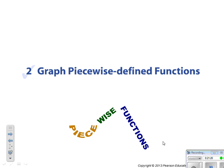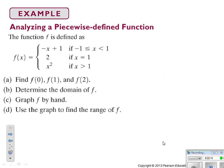Second learning objective: graph piecewise defined functions. That means we piece different functions together, which is valid because life isn't always a smooth continuous graph. Tax rate is a great real-world example of a piecewise function — you make a certain amount and it's one rate, then a different amount and it's a different rate. Life is a piecewise function.